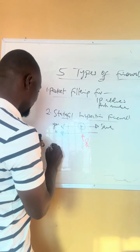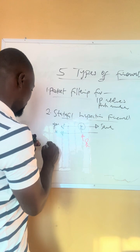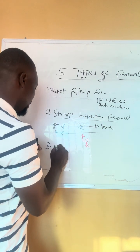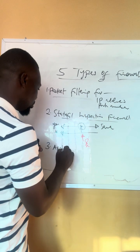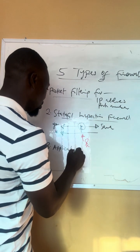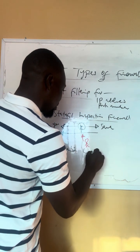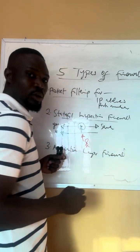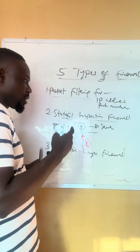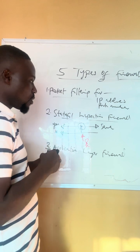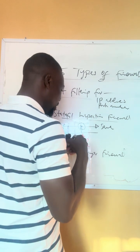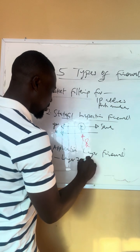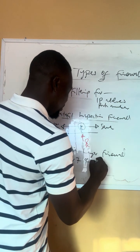Another type of firewall, number three, is what is called application layer firewall. This firewall performs filtering at layer seven of the OSI model.